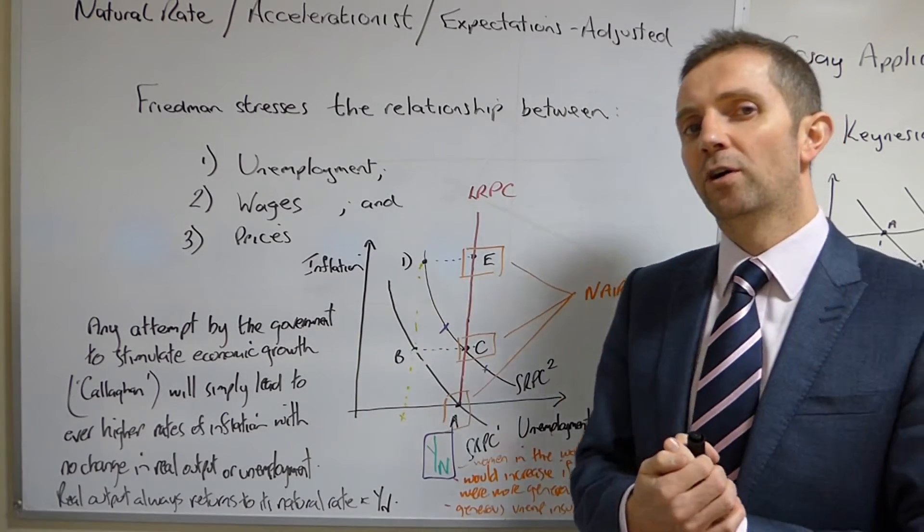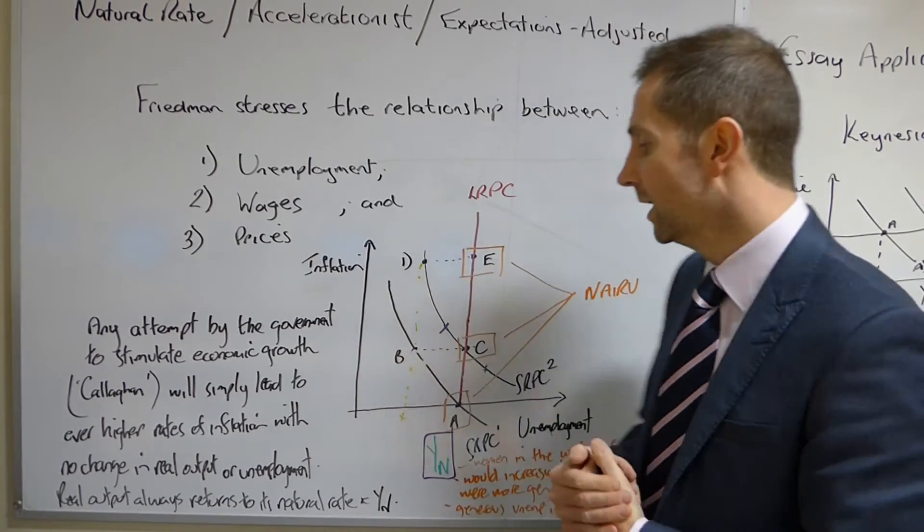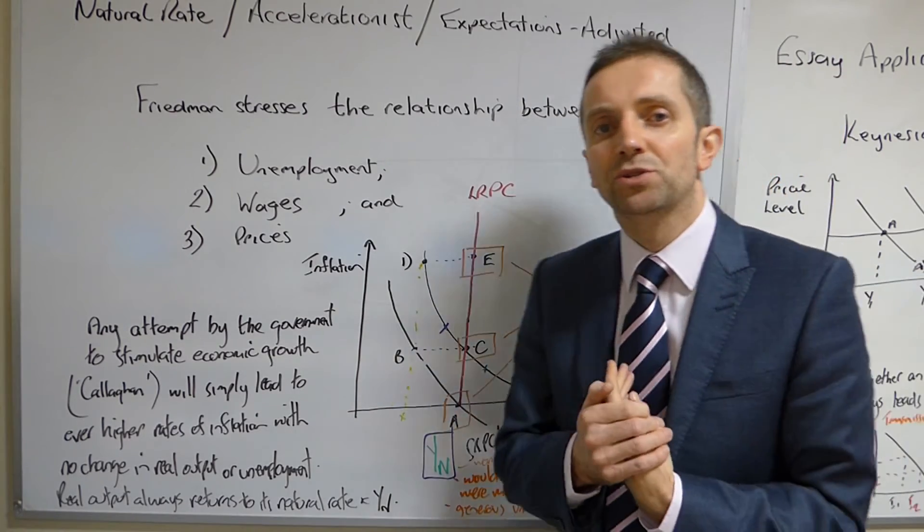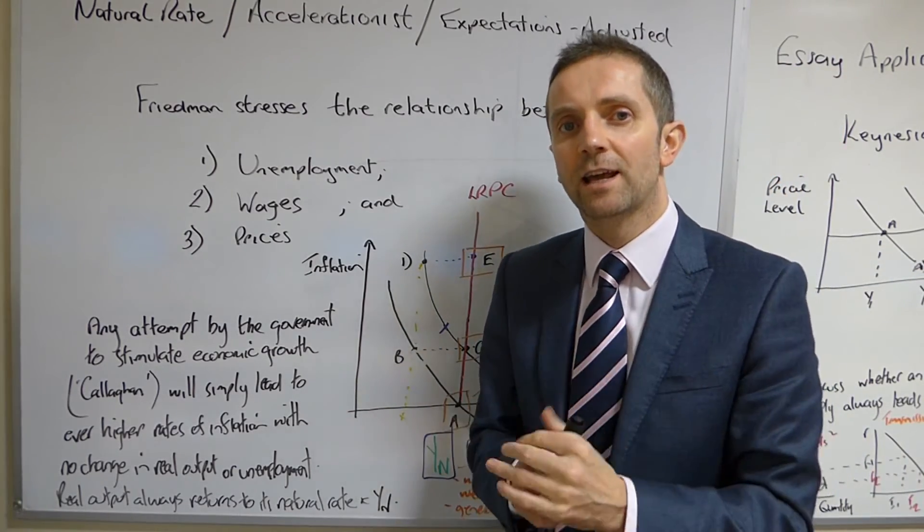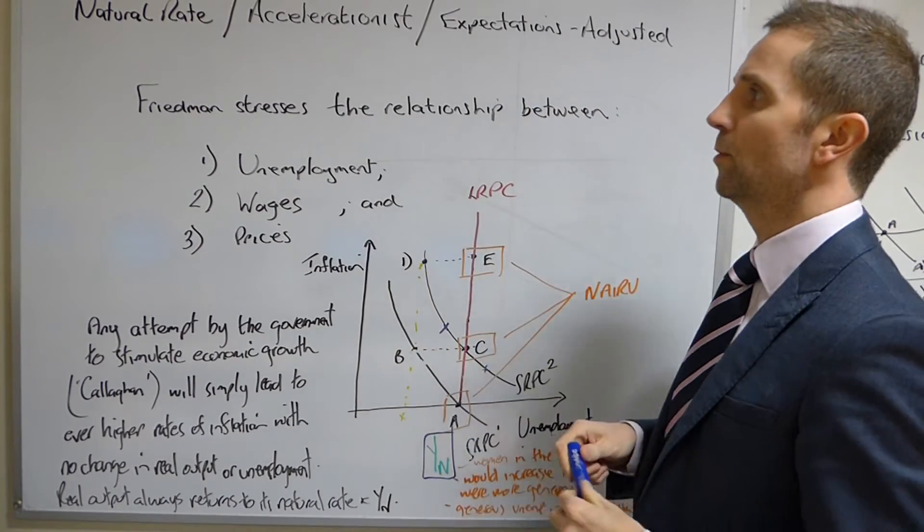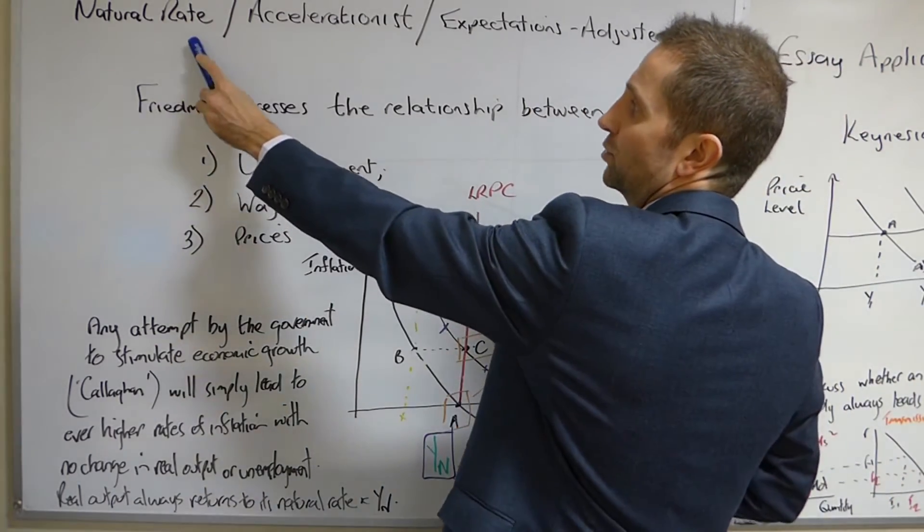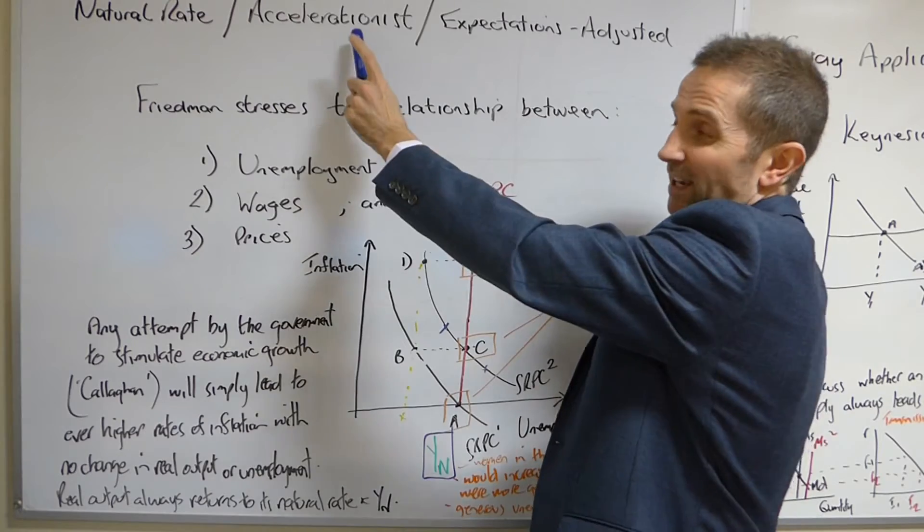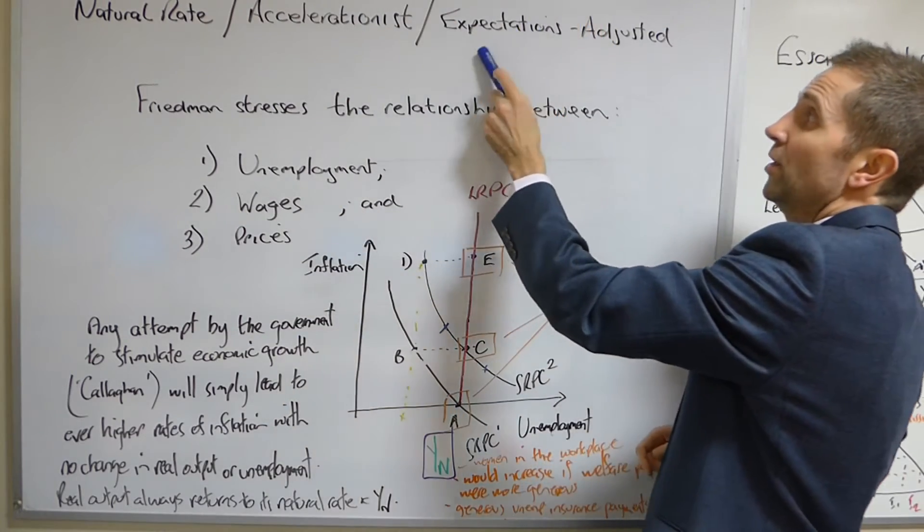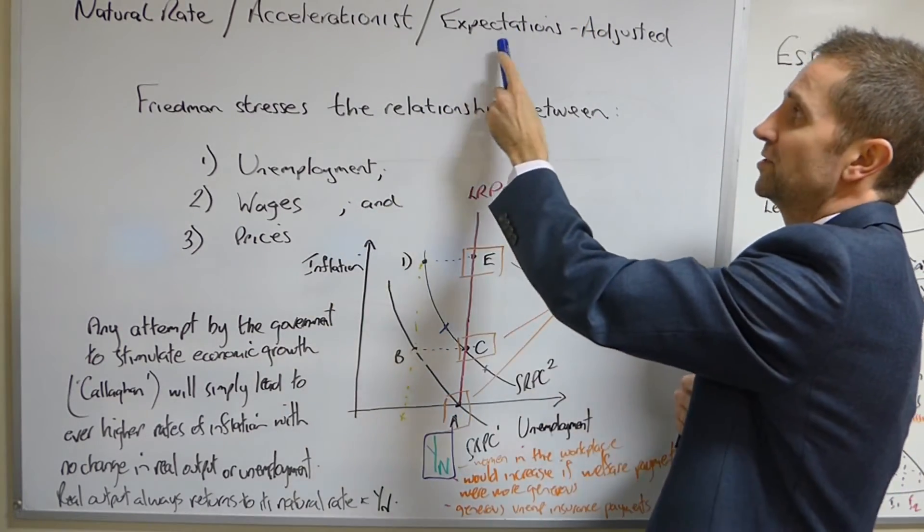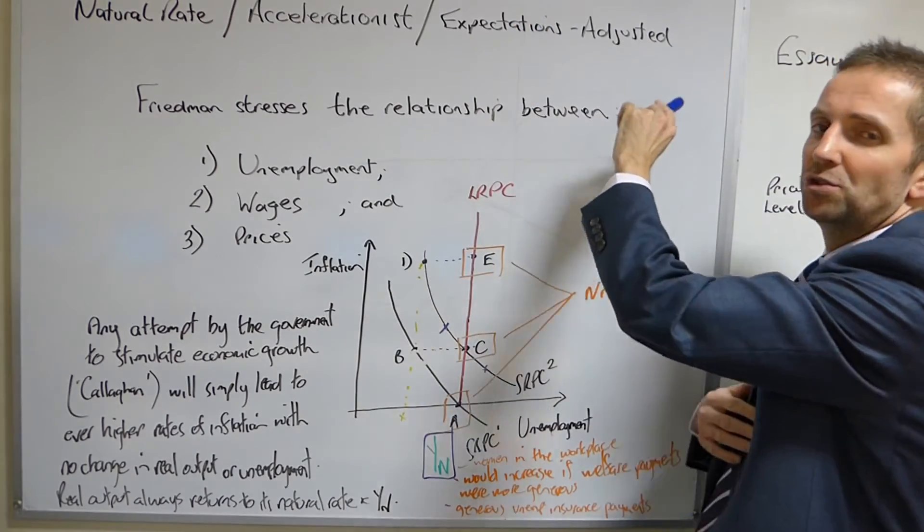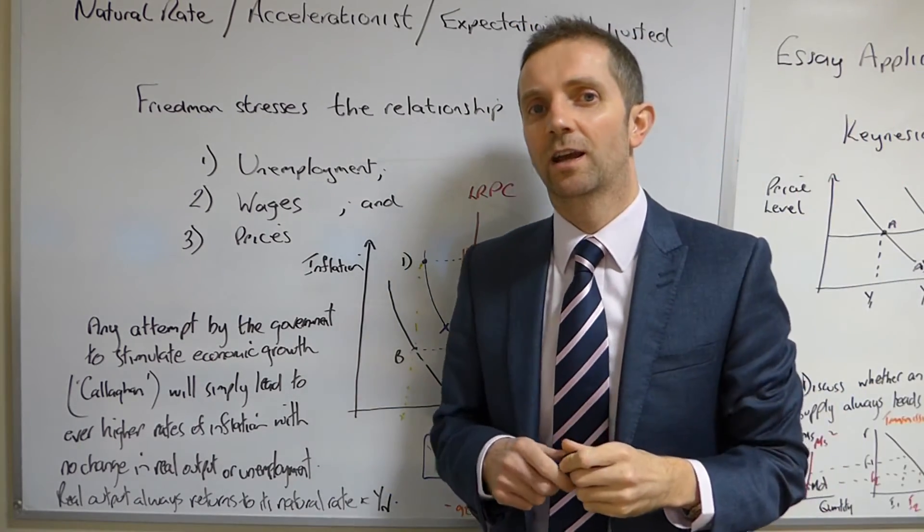However, move on further and even that relationship seemed to be breaking down. And this then led Friedman to come up with this theory which is the natural rate theory, otherwise known as the accelerationist theory, otherwise known as my personal preference here, the expectations adjusted theory.